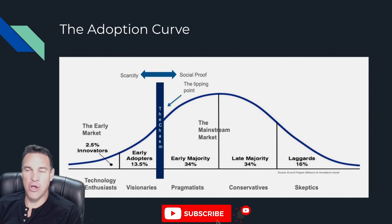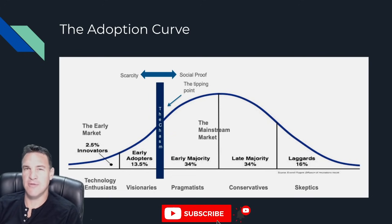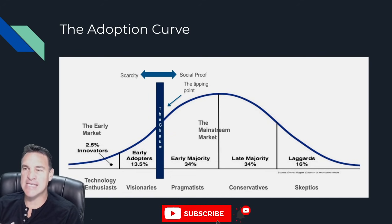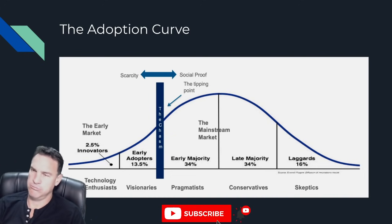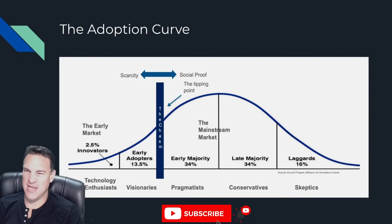An example might have been the early internet and email. The innovators were doing something like 'C colon slash slash run DOS run send email' — and you and I weren't going to do that. But innovators were willing. Then they made it a little bit easier. The chasm might have been the invention of the mouse — now you've got a webpage, you click 'compose,' type your message, click send. That might have been the tipping point. And boom, the early majority can just flood in — 70 percent of the world's population jump in in a very, very short amount of time.